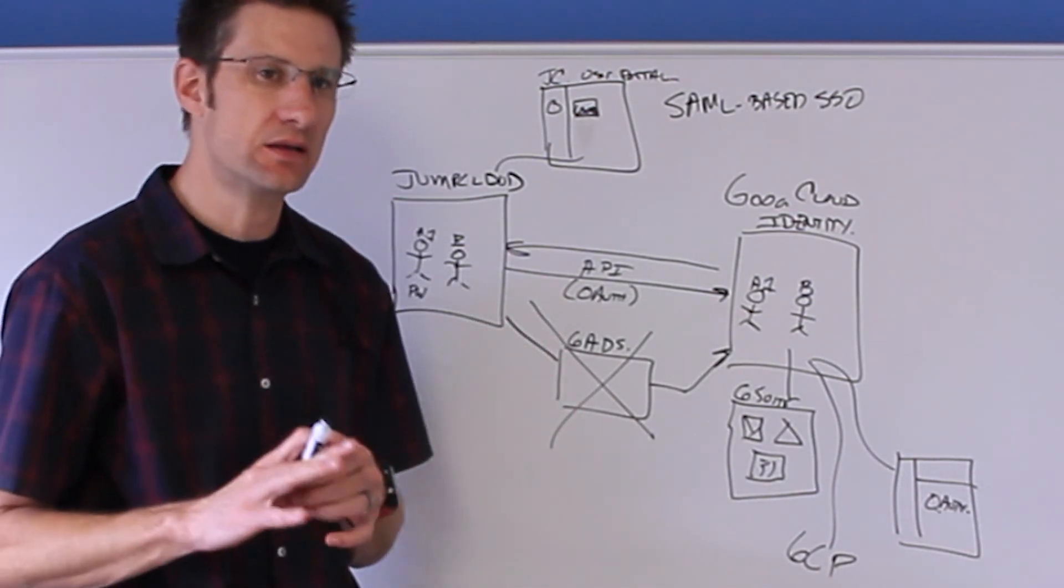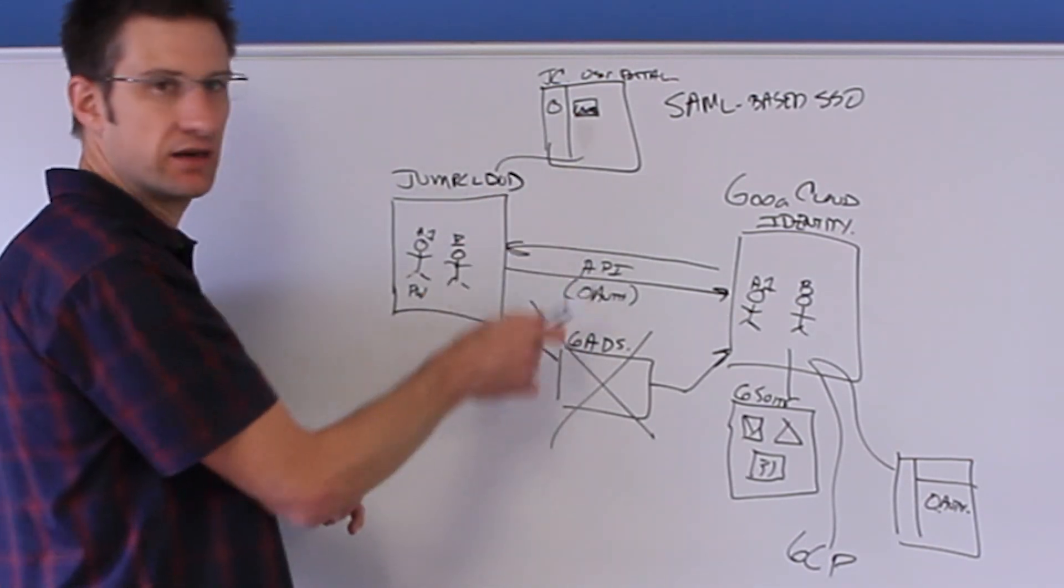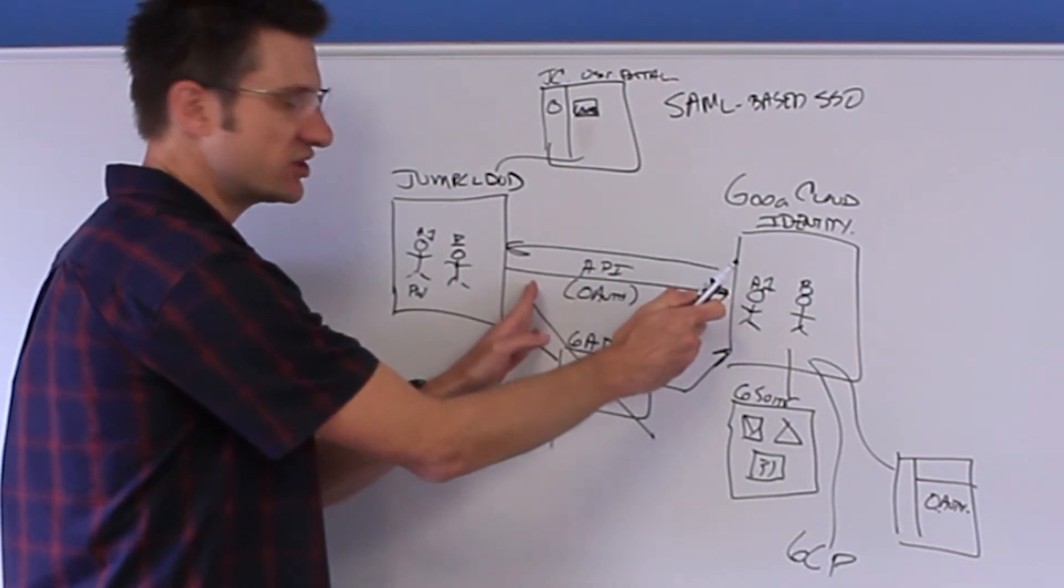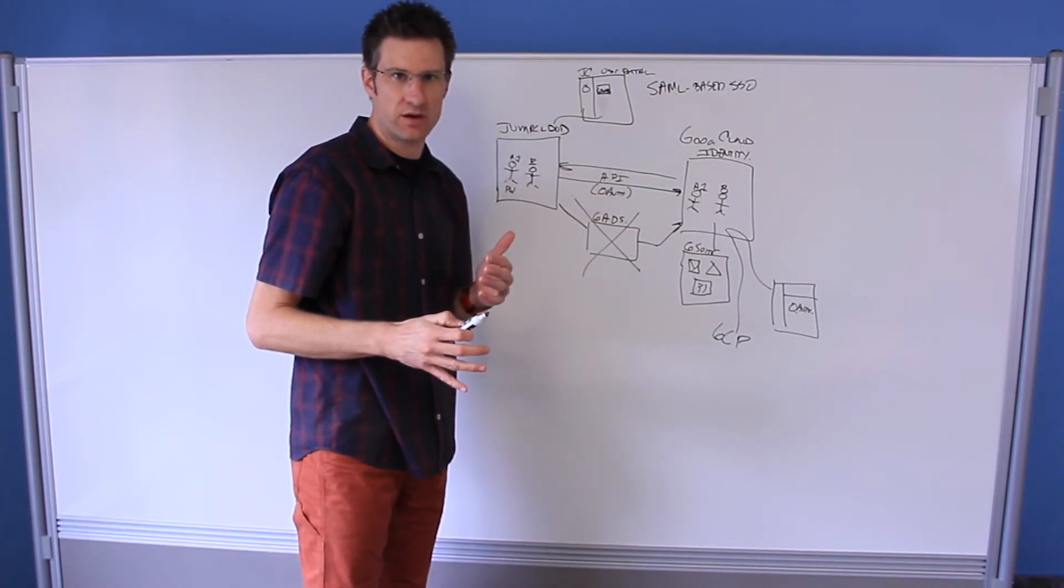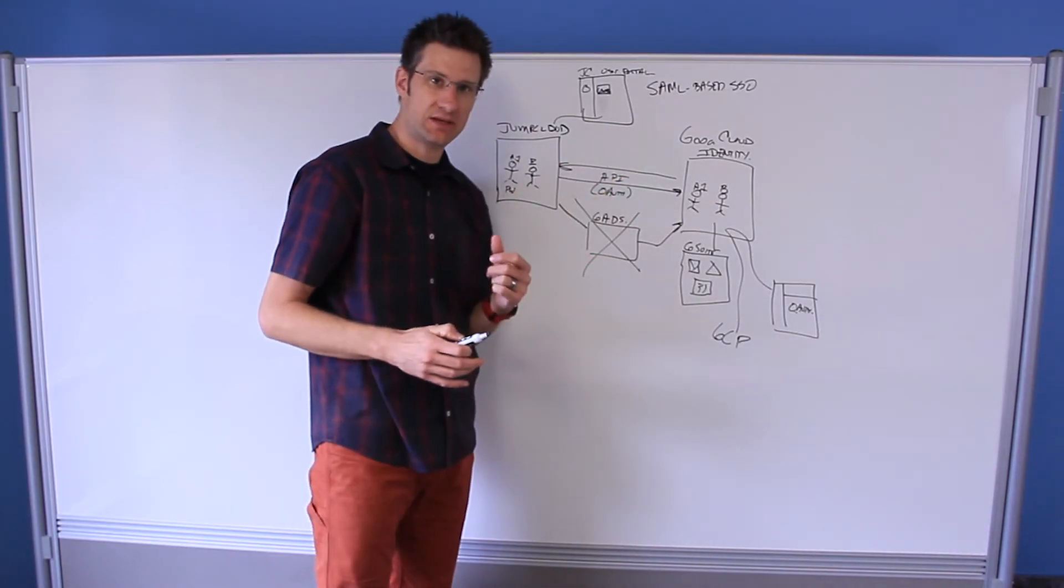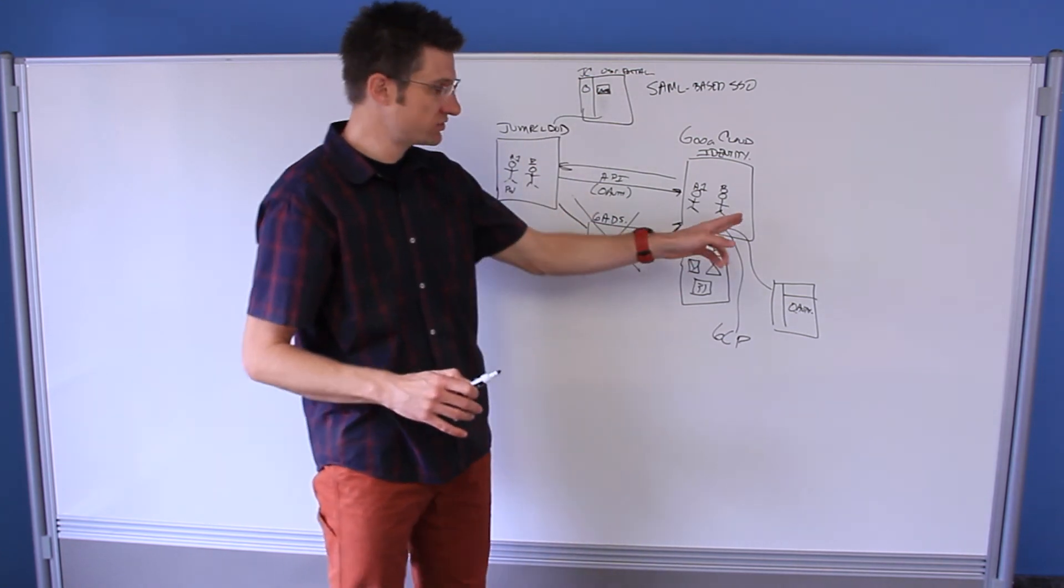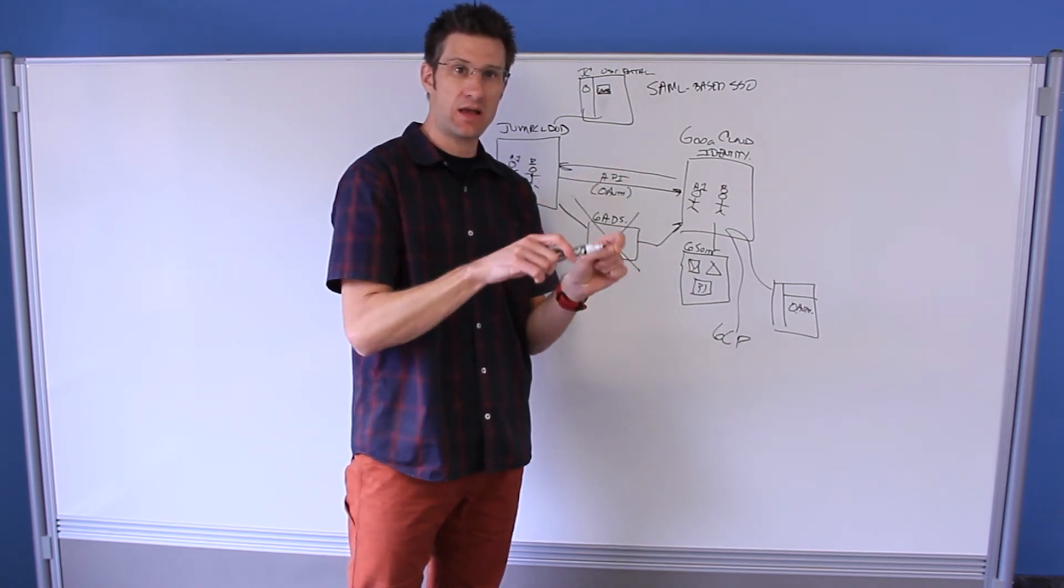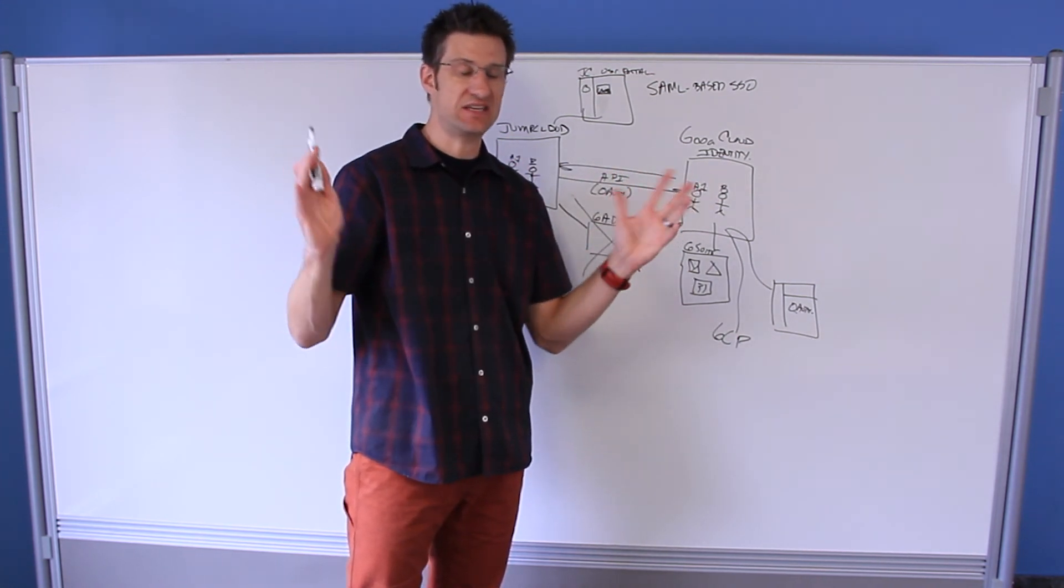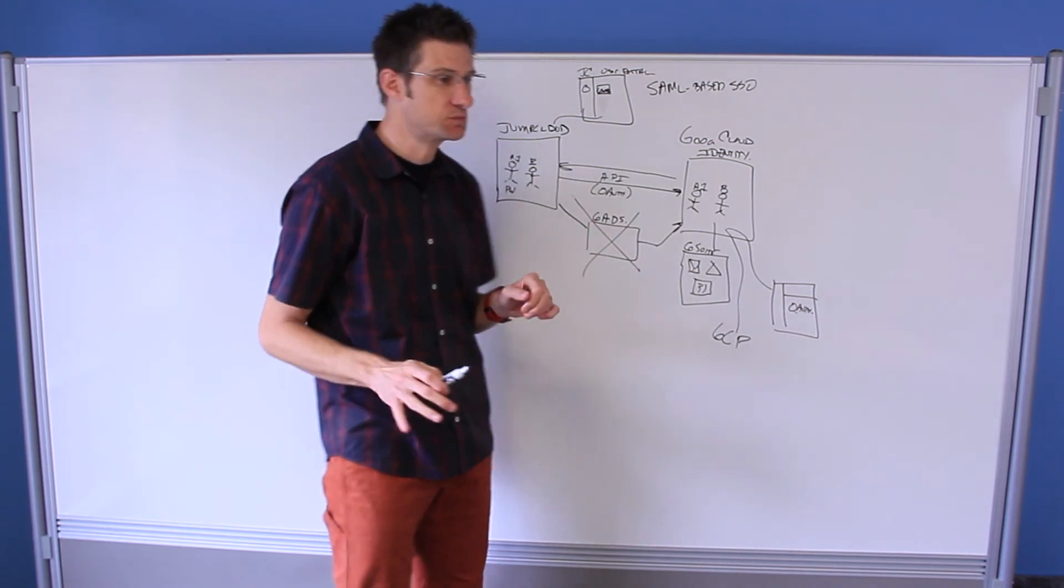I want to make something very clear here also. These two particular integrations, the provisioning integration and SAML, can be used independently of one another. You can use our provisioning and not use SAML-based SSO and everything's fine. The user just goes to gmail.com, logs in with their corporate email and their JumpCloud password, and it's a seamless user experience, just like you and me do probably from our home Gmail accounts. Same exact experience.